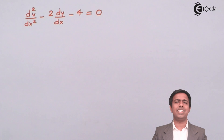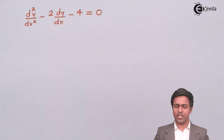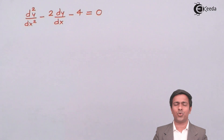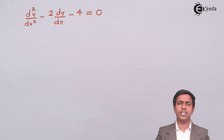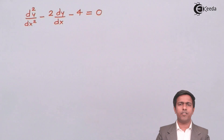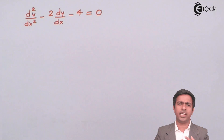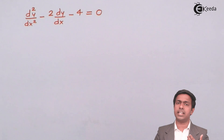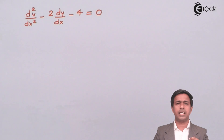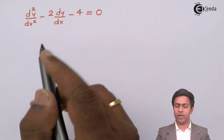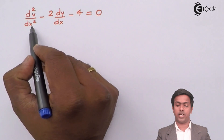Here you can see one differential equation which is d²y/dx² minus 2 dy/dx minus 4 equal to 0. The question is how to find the solution of this higher order differential equation. Observe the right-hand side — whenever we want to find the solution of any higher order differential equation, we observe the right-hand side, and here it is 0. Also, the left-hand side is of the type higher order differential equation with constant coefficients, because the coefficients along with dy/dx and d²y/dx² are constant.